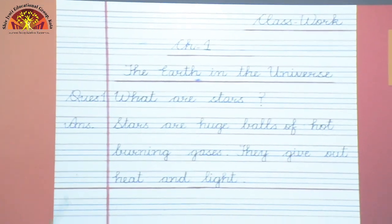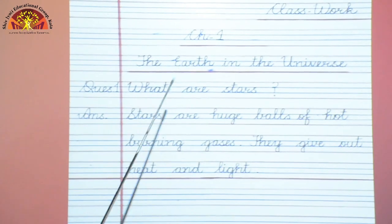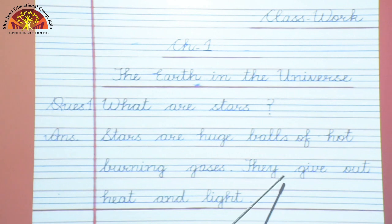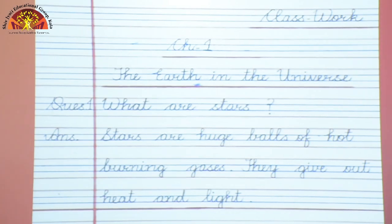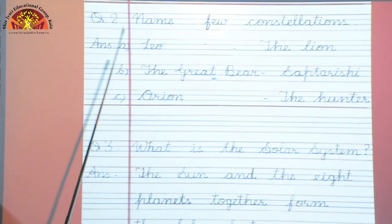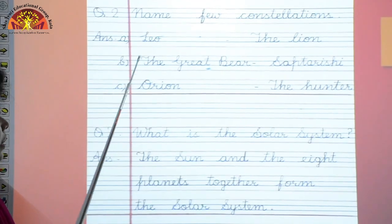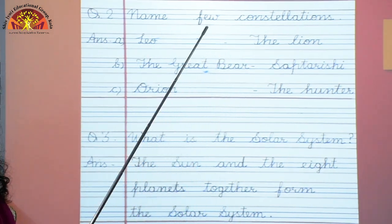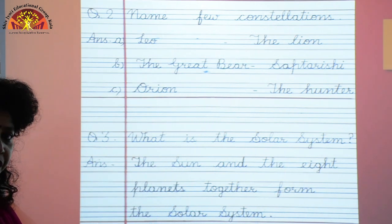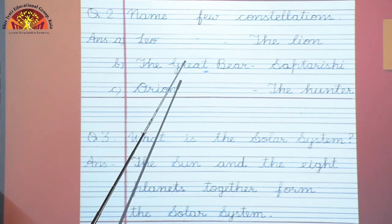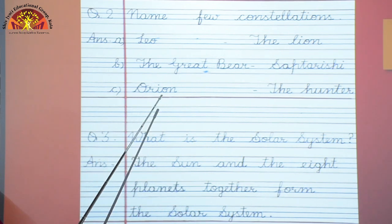Now we shall proceed with the copy work of Chapter 1 - The Earth in the Universe. Question 1: What are stars? Stars are huge balls of hot burning gases and they give out heat and light. Remember that stars give out heat and light, but planets and the moon do not have heat and light of their own. Question 2: Name a few constellations. The answer is: A - Leo the Lion, B - the Great Bear or Saptarishi, C - Orion the Hunter. These names are based on the shapes the constellations make — named after animals or myths and legends.